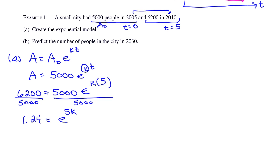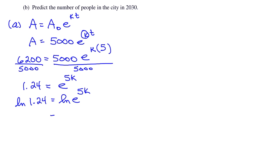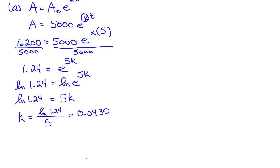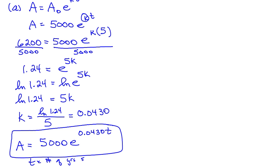And so we get 1.24 is equal to e to the 5k. Now to solve for k, k is in the exponent, so we'll use logs. So take the natural log of both sides. Again, we have this property where the natural log of e to something is just simply that something. And then solve for k. Now we're going to write down a few decimals here, but you'd really need to store this in your calculator to use it later. A is equal to, so here's the model, 5,000, the initial population, e to the 0.0430 t. Now also recall that t is equal to the number of years since 2005.